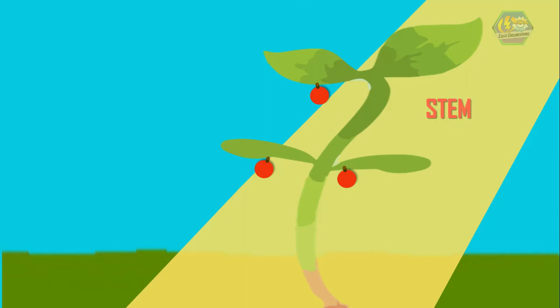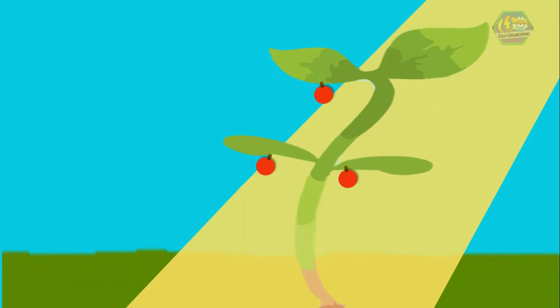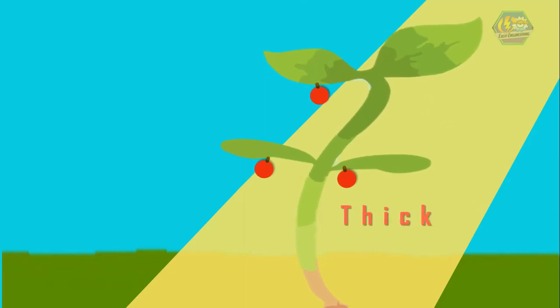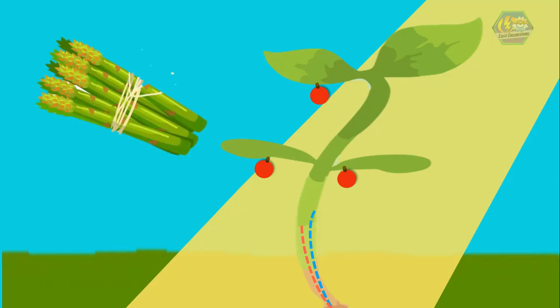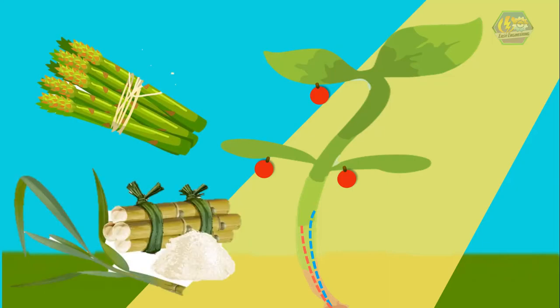The stem helps hold the plant up and support the leaves and flowers. It can be thick or thin. It also allows water and nutrients to flow up to the leaves. Sugar cane and asparagus are examples of stems that we eat.